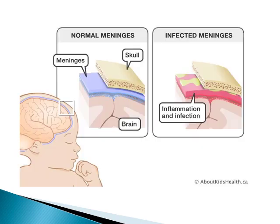This photo demonstrates the difference between normal meninges on the left and infected meninges on the right. In normal meninges, they look completely healthy, while in infected meninges, they look congested, red in color, and covered with yellowish exudate that corresponds to pus formation.